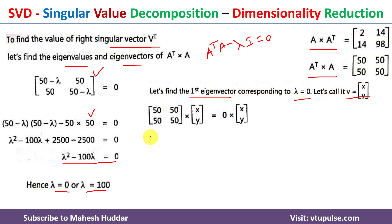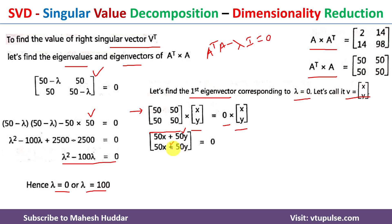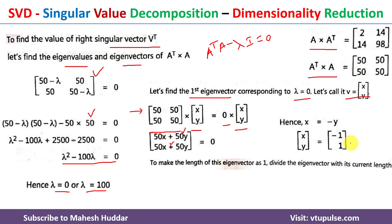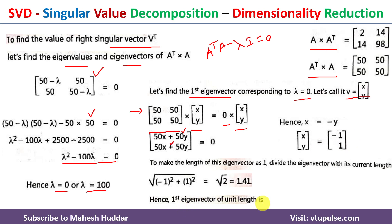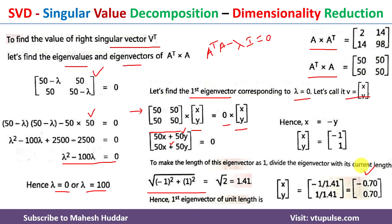For the eigenvector corresponding to λ = 0, using Aᵀ×A · v = 0: we get 50x + 50y = 0 and 50x + 50y = 0. This means x = −y. If y = 1 then x = −1. We calculate the length and divide to get the unit eigenvector corresponding to λ = 0 for V transpose.